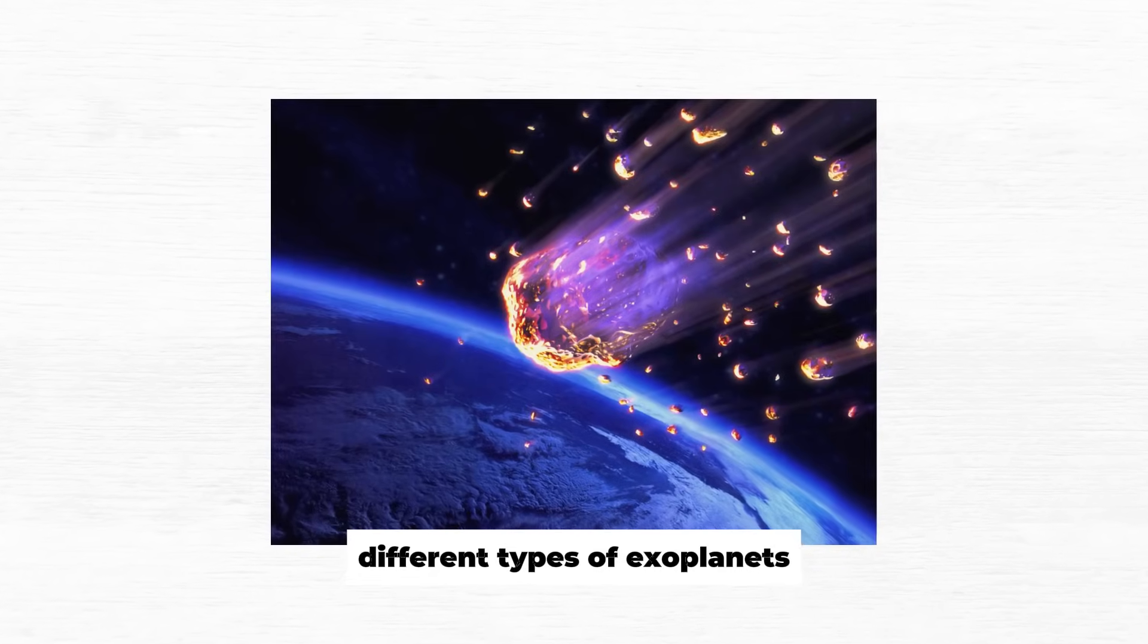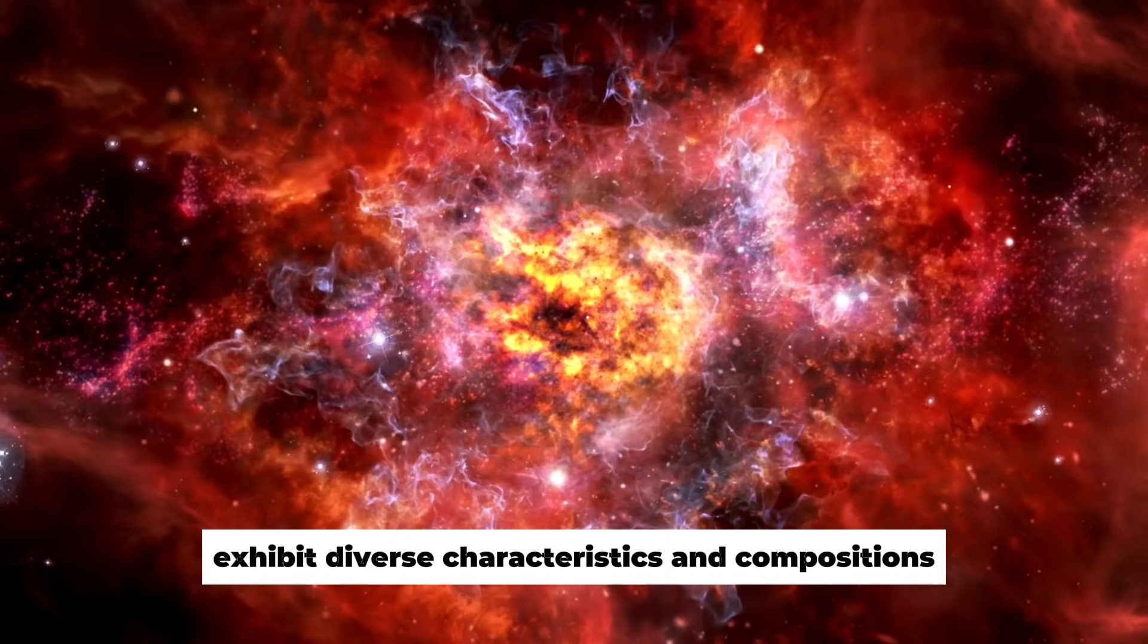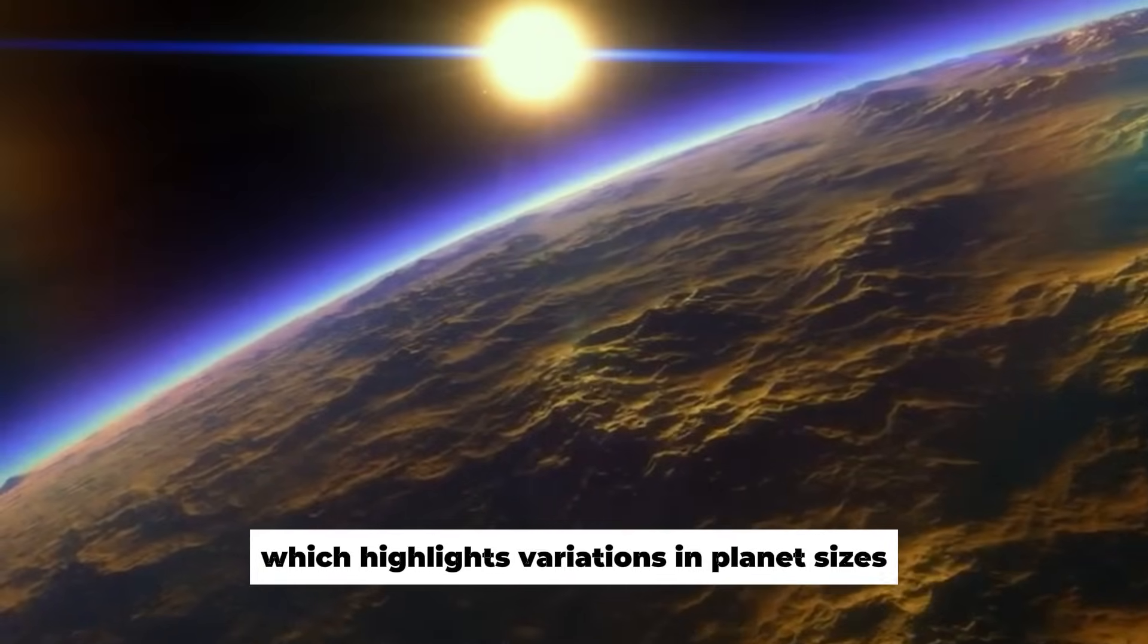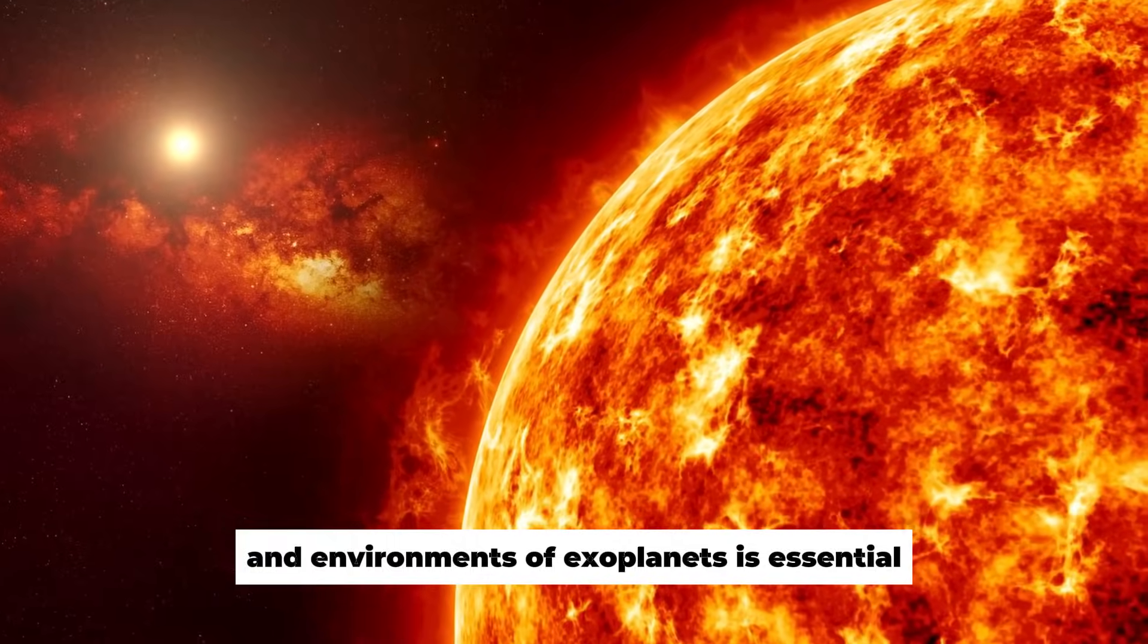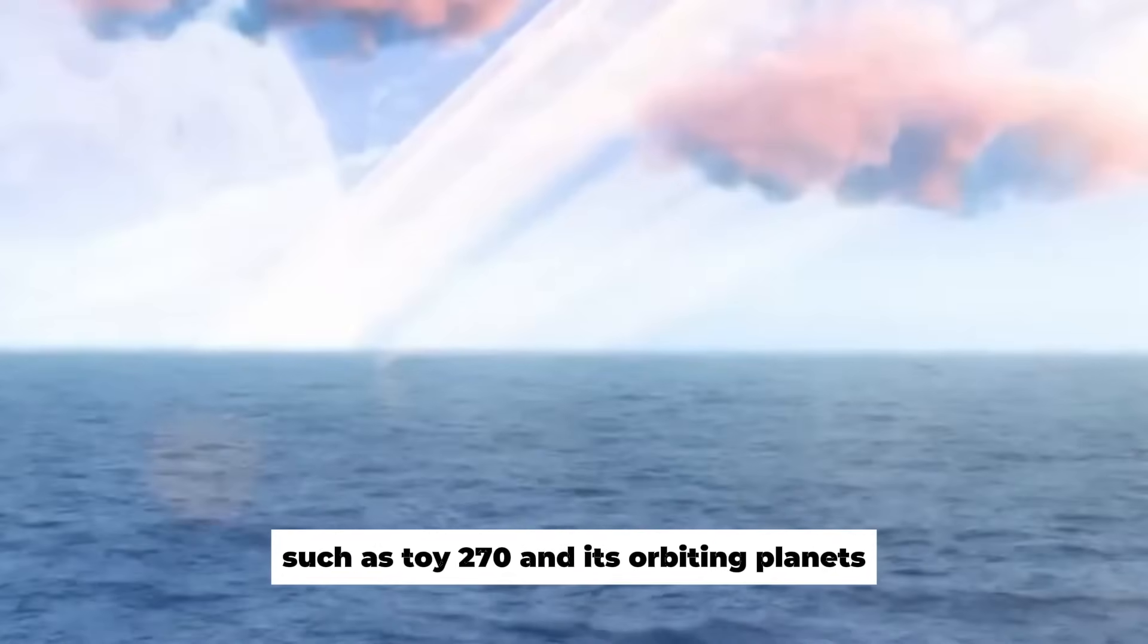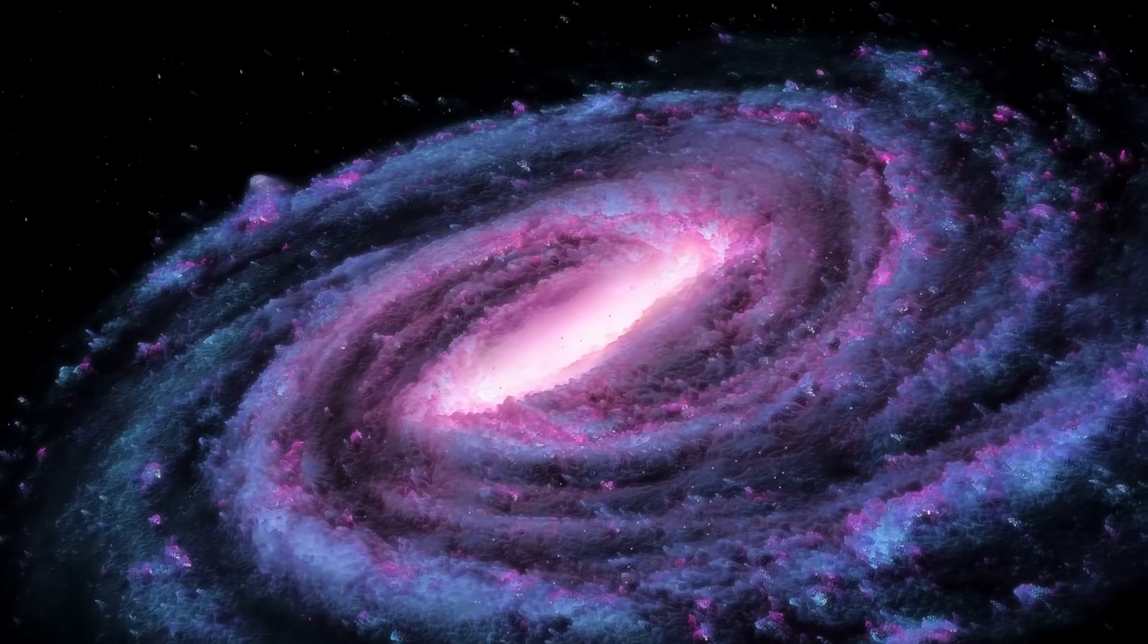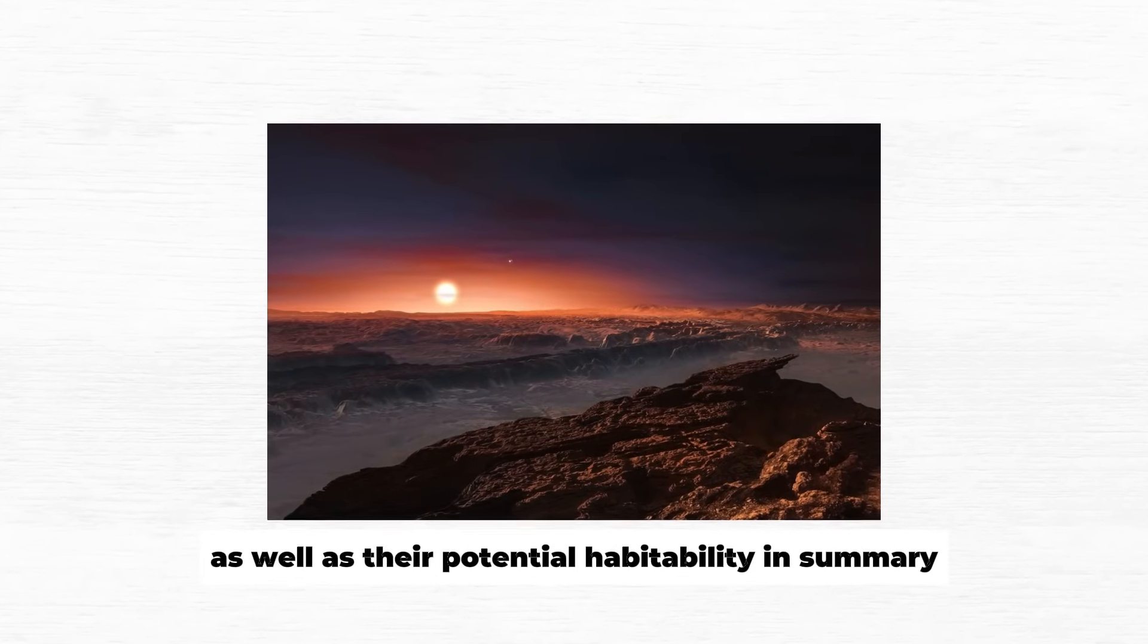Different types of exoplanets, such as hot Jupiters, Neptunian exoplanets, super-Earths, and mini Neptunes, exhibit diverse characteristics and compositions. The study of exoplanets has revealed intriguing phenomena such as the Radius Valley, which highlights variations in planet sizes. Understanding the composition and environments of exoplanets is essential for determining their potential for hosting life. Recent discoveries, such as TOI 270 and its orbiting planets, offer valuable insights into the diversity of planetary systems. Further research into these systems may shed light on the formation and evolution of planets, as well as their potential habitability.